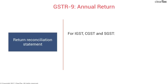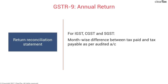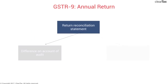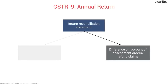In the first category, if the difference is on account of audit, you'll have to submit details for all three categories of taxes — IGST, CGST, and SGST. You'll have to give month-wise differences between the tax paid and the tax payable as per audited accounts. Even though the audited accounts is an annual statement of profit and loss, you'll have to find out the difference within each month. This is to calculate interest and penalty — the interest is charged at a per-month rate. Along with the differences, you will also put in the amount of interest and penalty in case of short payment.